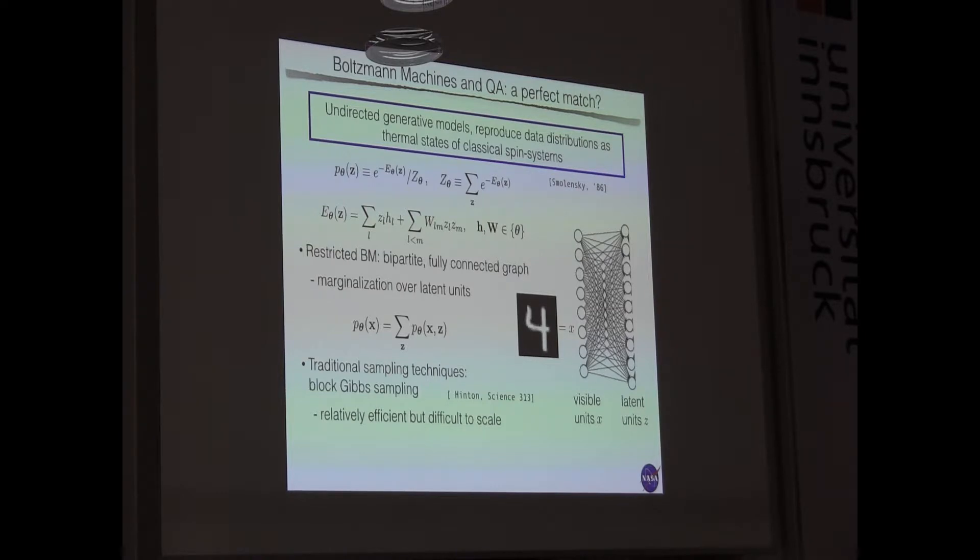You have to sample to solve this machine learning problem. Traditional techniques are like Gibbs sampling. Basically a flavor of Markov chains, spin updates, usual thing. It's relatively efficient, but it's difficult to scale. And that's why state-of-the-art techniques don't really use Boltzmann machines. The goal here is to use quantum annealing to scale, to sample from large Boltzmann machines in a faster and more reliable way.